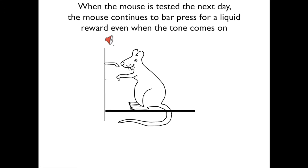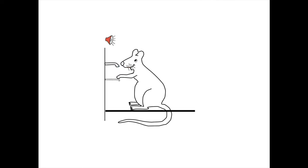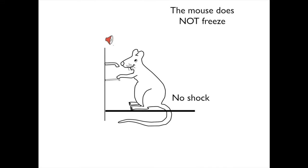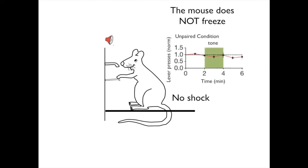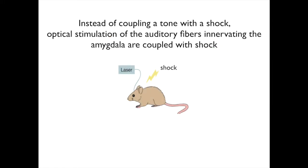When the mouse is tested the next day, the mouse continues to bar press for a liquid reward even when the tone comes on. The mouse does not freeze. This data is plotted as a graph and is called the unpaired condition.